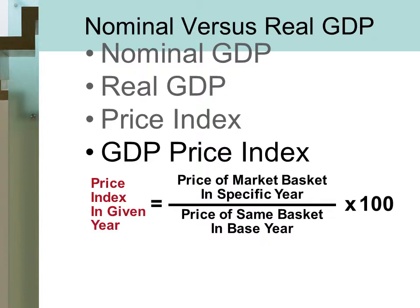We'll also talk about why real GDP is a much better method of comparing economic output over time, and then look at some methodologies on how we actually calculate real GDP from nominal GDP. Nominal GDP is GDP reported in the prevailing year's price level — it's gross domestic product which has not been adjusted for changes in the price level.